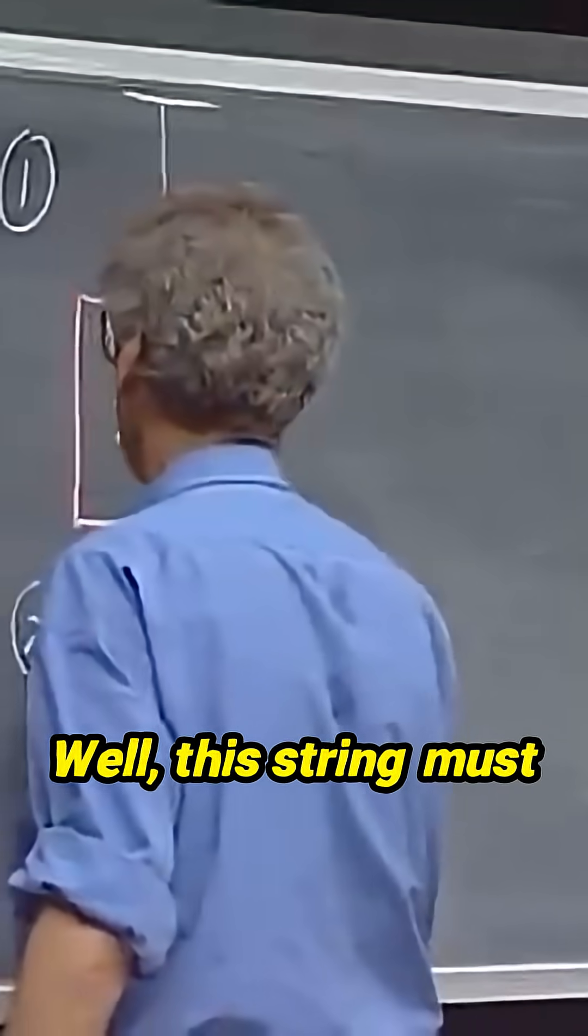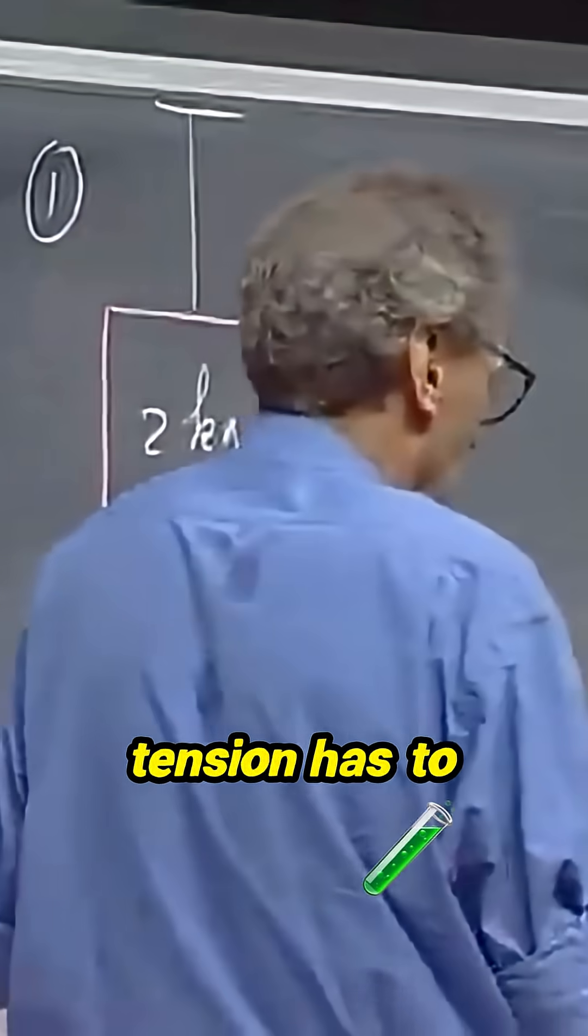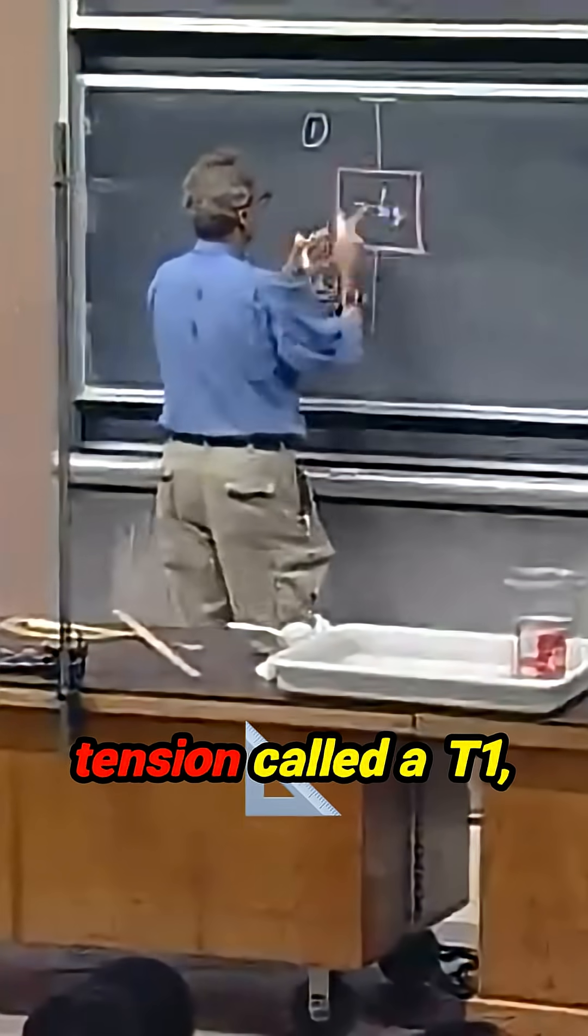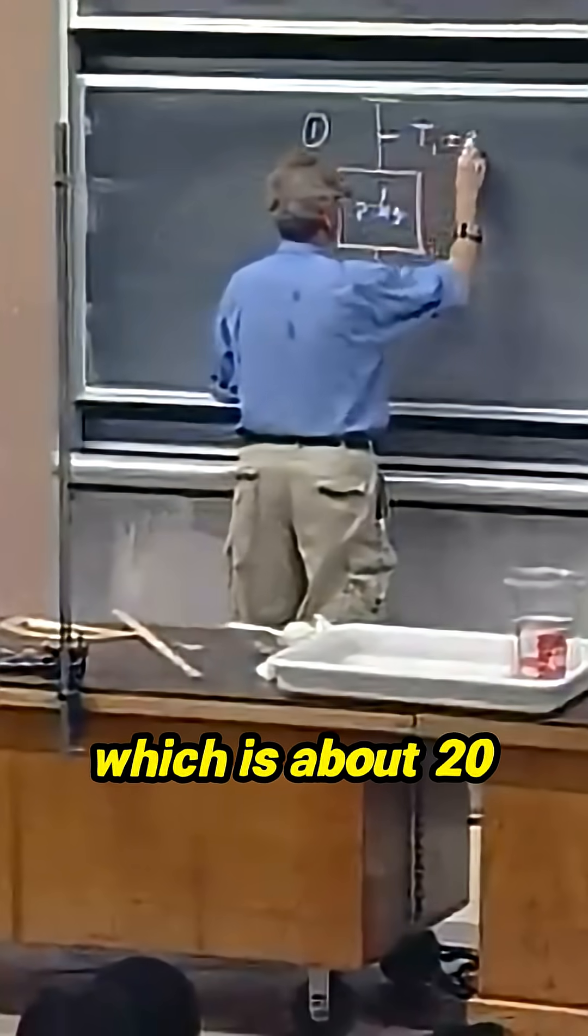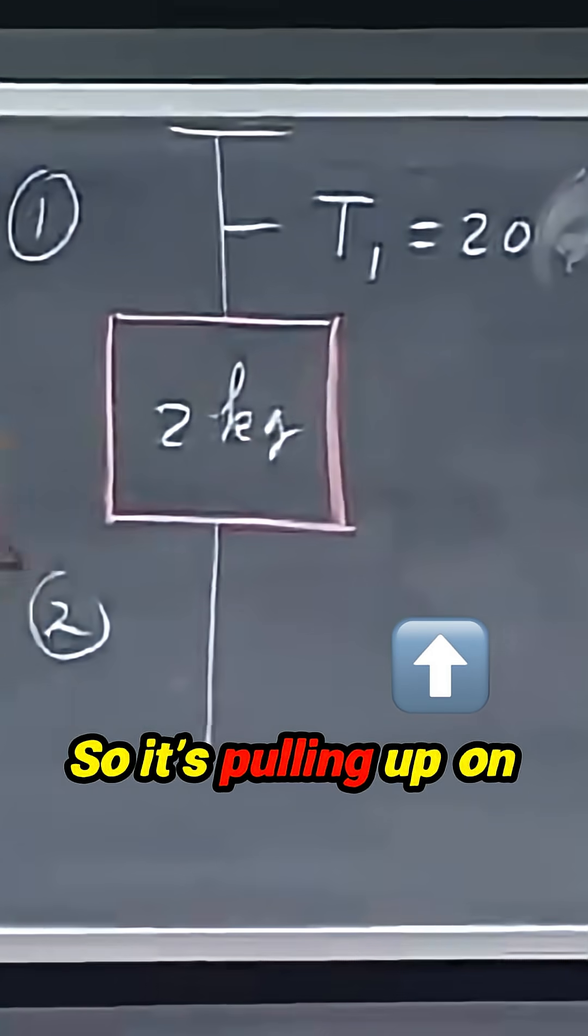This is string number two. Well, this string must be able to carry these two kilograms, so the tension has to be twenty newtons. So you will find here a tension called T1, which is about twenty newtons. So it's pulling up on this object.